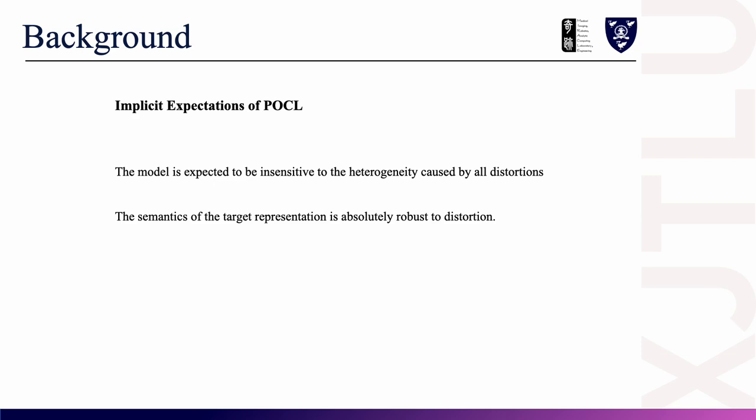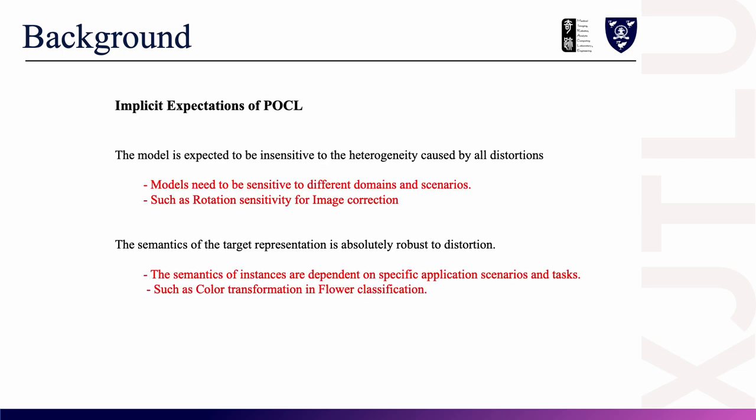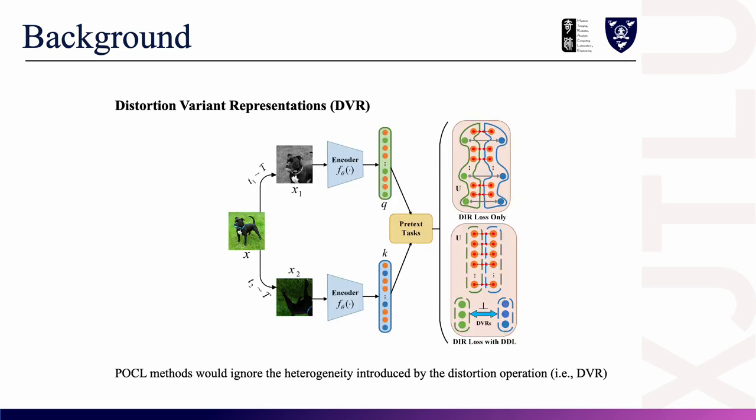The first expectation is that in POCL, the model is expected to be insensitive to all heterogeneity resulting from distortion. The second expectation is that the semantics of the target feature is absolutely invariant to distortion. We think these are two ideal expectations. Regarding the first expectation, some tasks require the model to be sensitive to some distortions, such as rotation sensitivity for image correction. Regarding the second expectation, the semantics of instances is task-based — for instance, color transformations very much affect the fine-grained classification of flowers. These implicit expectations arise because POCL ignores the heterogeneity caused by distortion or augmentations.